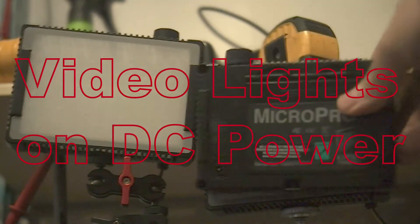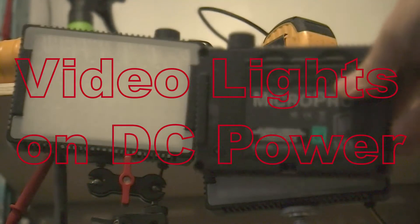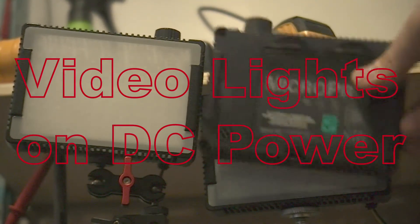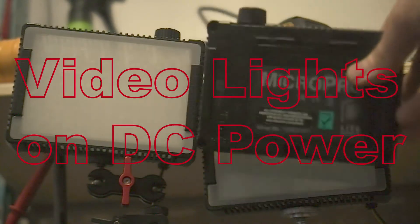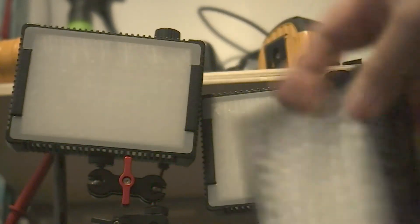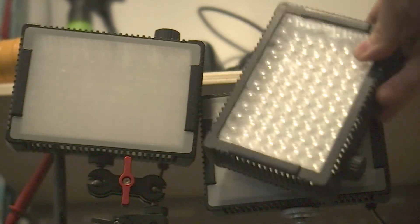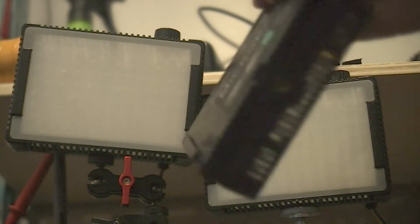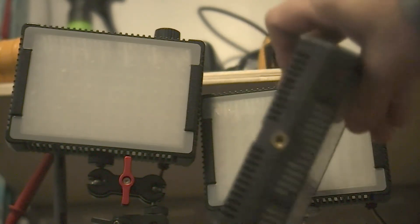So that's what they are right there, the Micro Pro. They're nice and light without any batteries in them. You can see them there without any filter. They have an adapter on the bottom there.